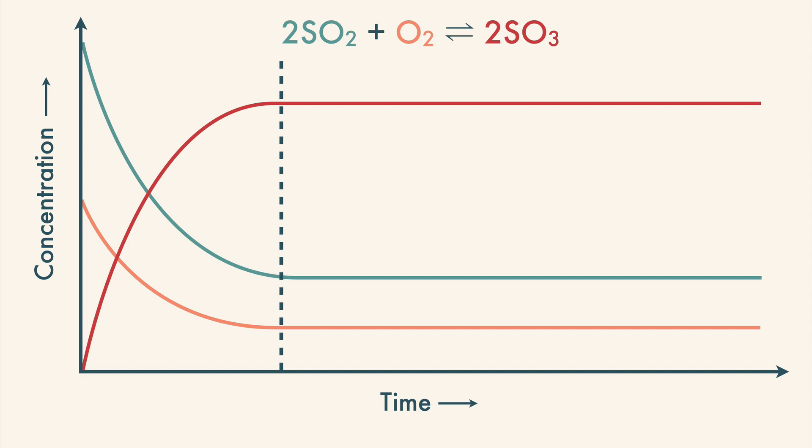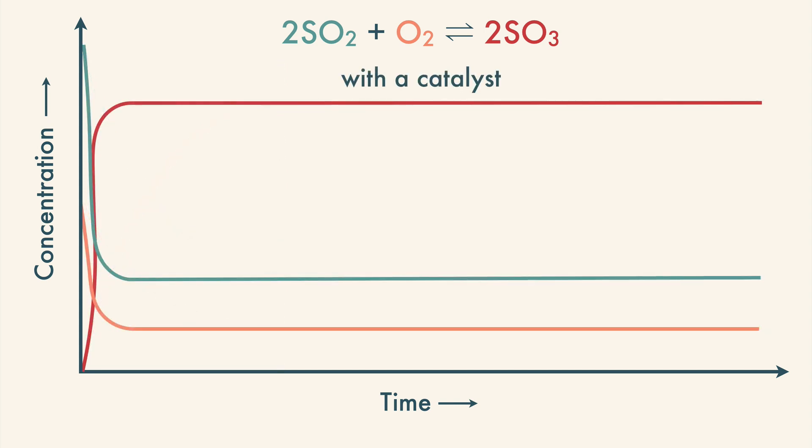It just means that the concentrations of products and reactants are no longer changing. Sometimes people mistakenly think that a catalyst will change the equilibrium of a reaction, but that's not true. All a catalyst does is speed up the time it takes to reach equilibrium. It does this by lowering the activation energy for the reaction to occur.